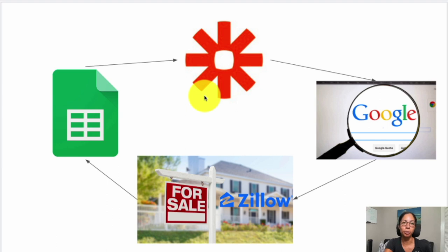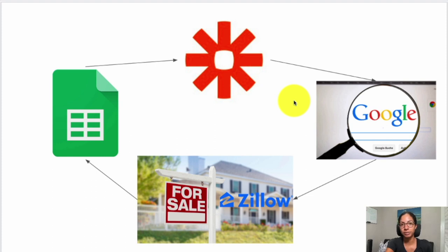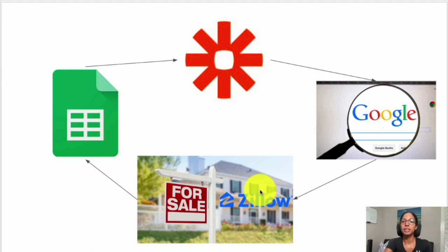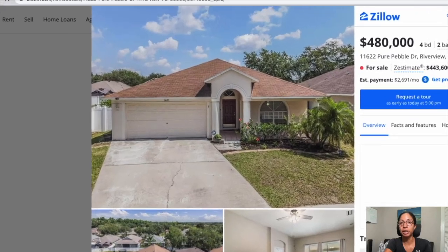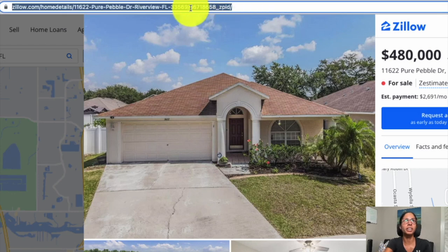Once we have a property address, we want to go get the property detail. But how do we know the property ID? Zillow has a unique identifier for every single property called the ZPID. If you look at any property on Zillow, you'll see in the URL that the ZPID is at the very end. For example, if I search 11622 Pure Pebble Drive in Riverview and select the Zillow link, we can see that ZPID up top.